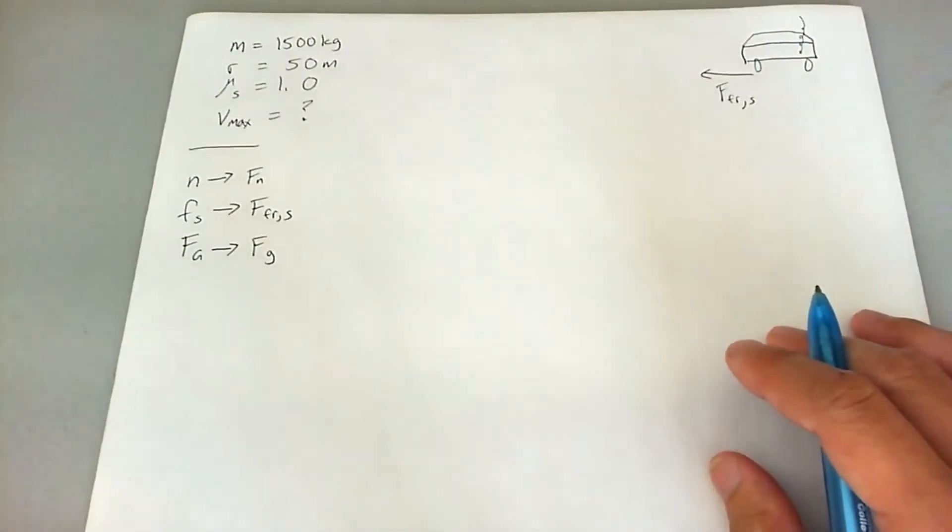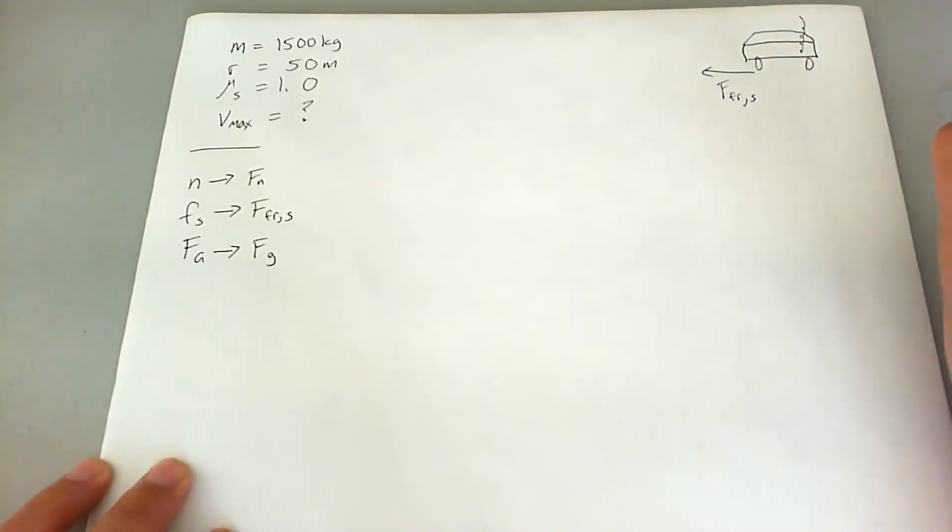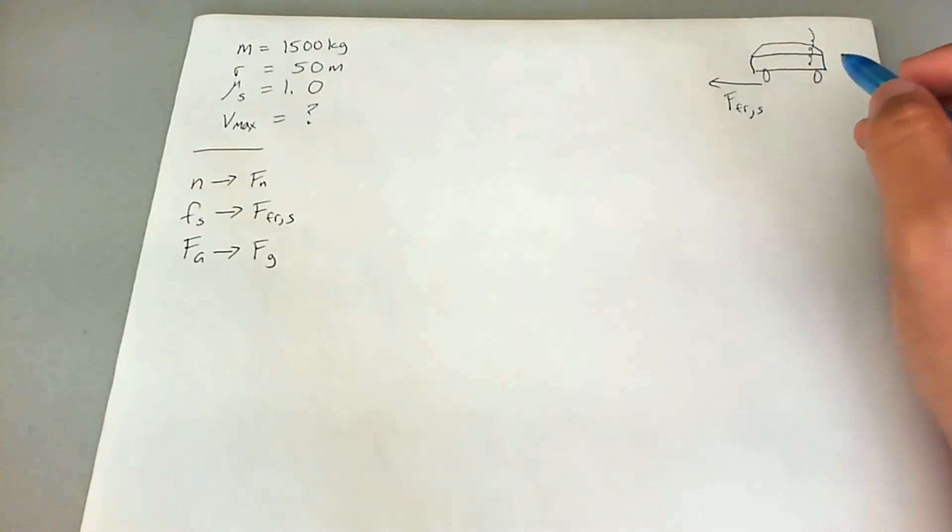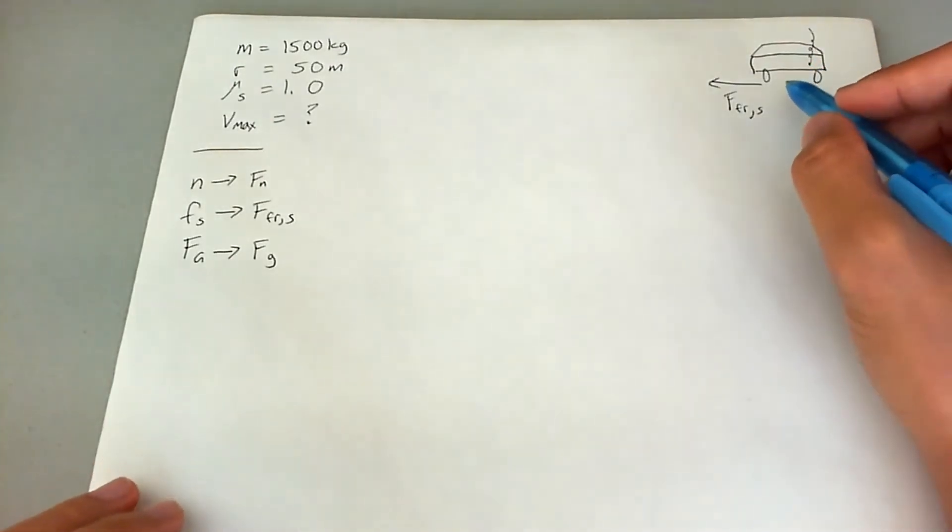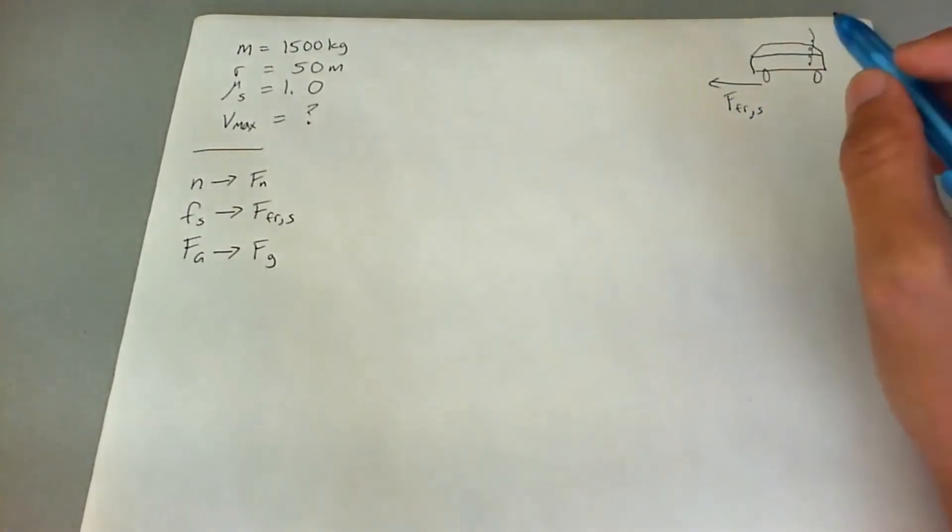So in this problem, the car is on leveled ground, so it's not going to be banked. And the only force that's going to be providing centripetal force is static friction force. Once it starts sliding, then it goes into kinetic friction force, which is not where we're going to go.